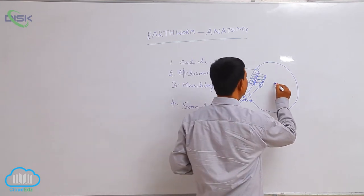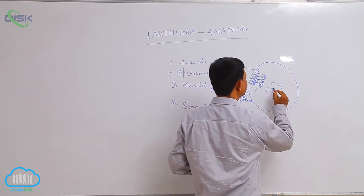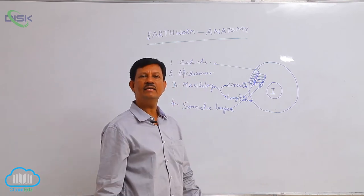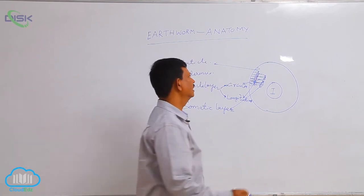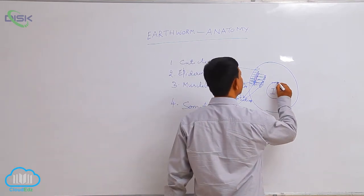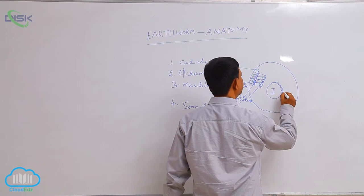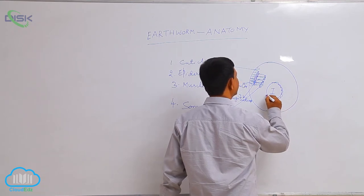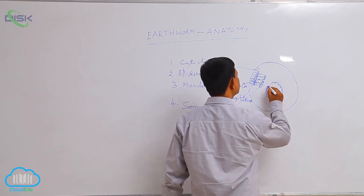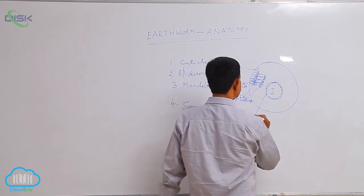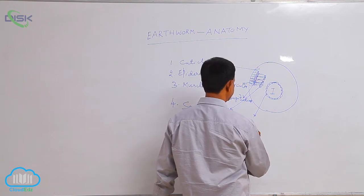In the middle of the body, the intestine — the alimentary canal — is present. The alimentary canal is externally covered by a layer which is also derived from the mesoderm. This layer is known as the visceral layer.